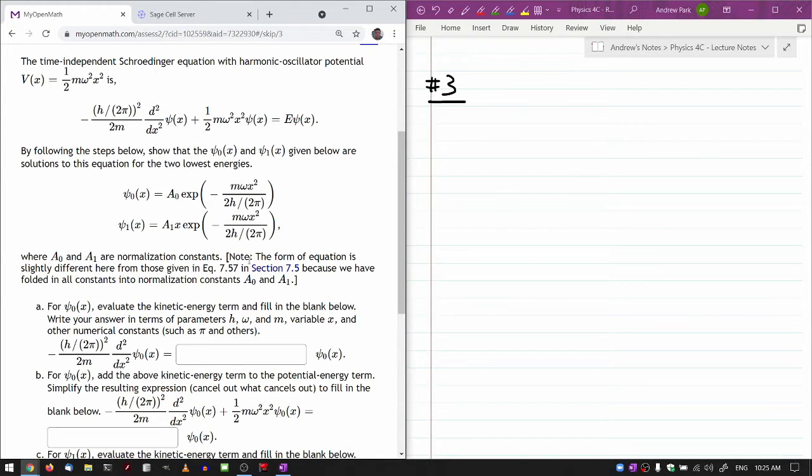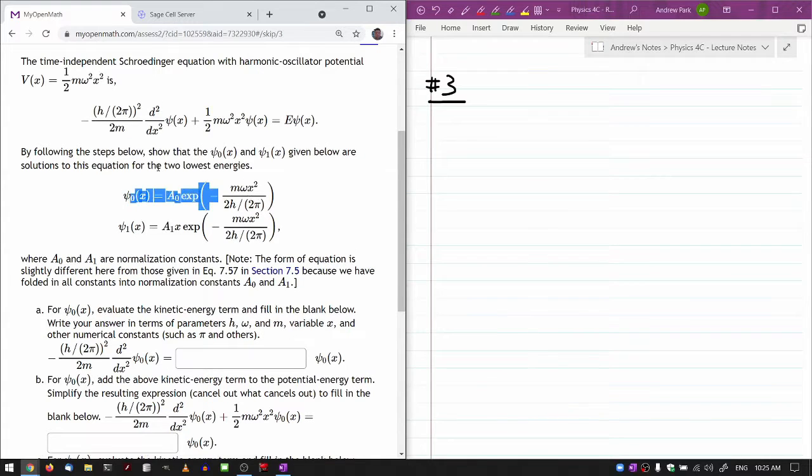So these two wave functions give you equations for the two lowest energies. This is the ground state with quantum number n equals zero, and this is the first excited state with quantum number n equals one.